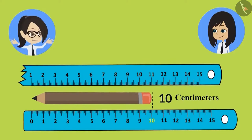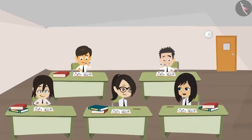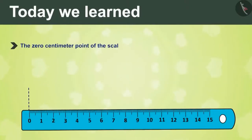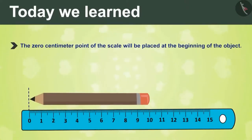We need to remember these two rules while measuring any object. The 0 centimeter point of the scale will be placed at the beginning of the object, and to measure an object, we will start from 0 marking on the scale.